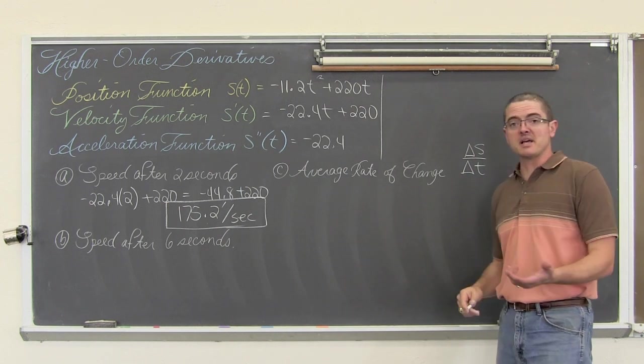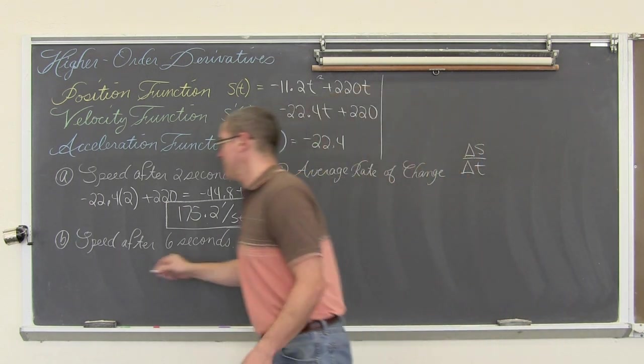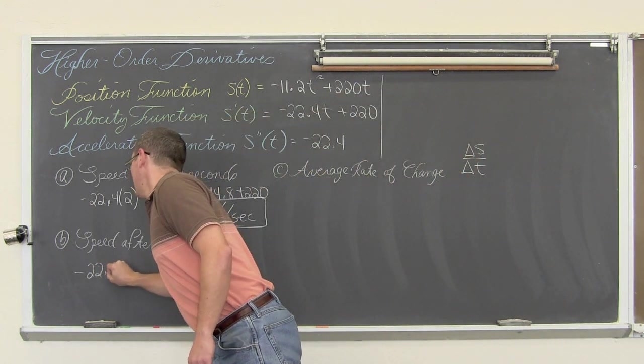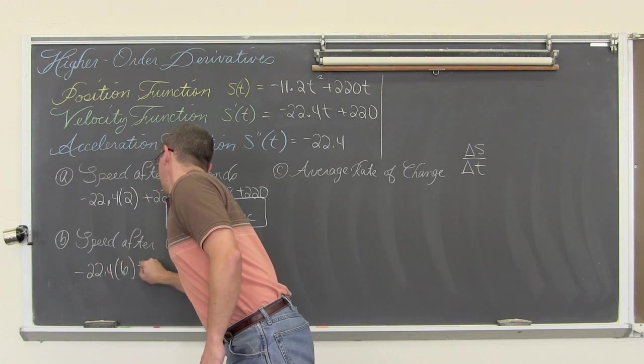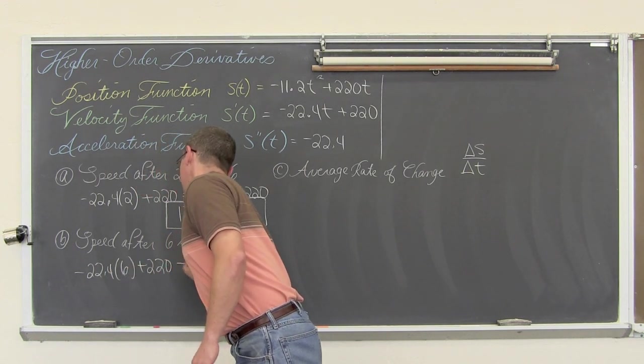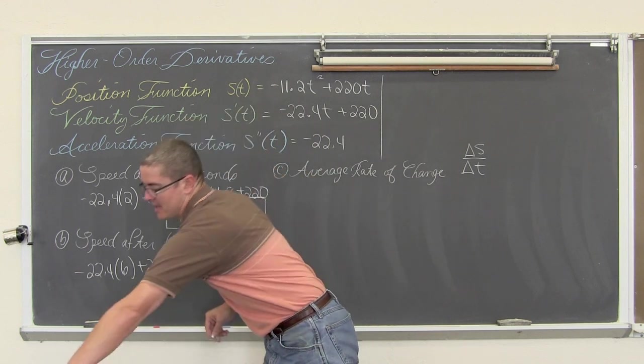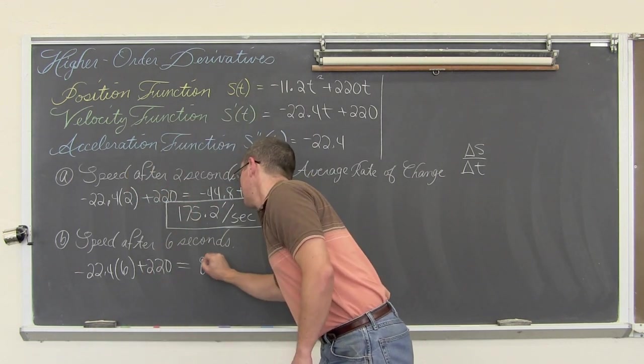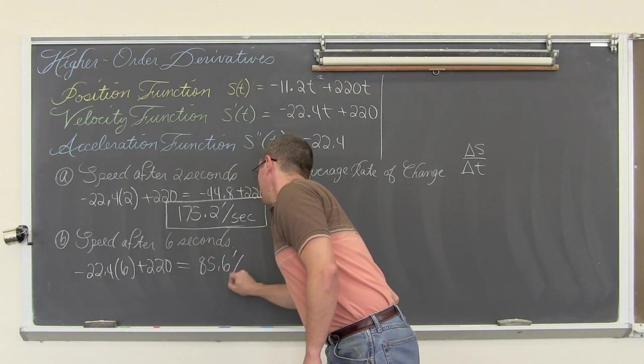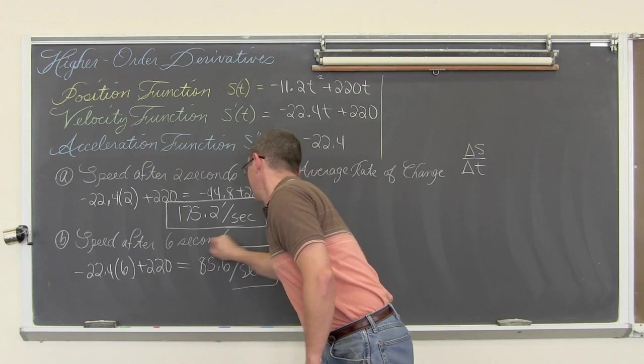After 6 seconds how fast is it going to be traveling? Well that is just negative 22.4 times 6 plus 220 and that is going to come out to be when you are done with it 85.6 feet per second.